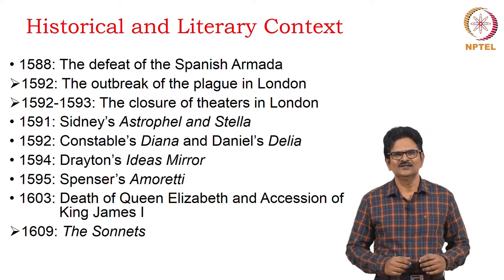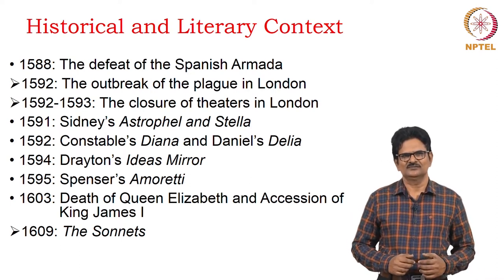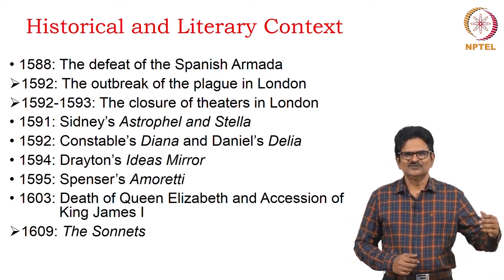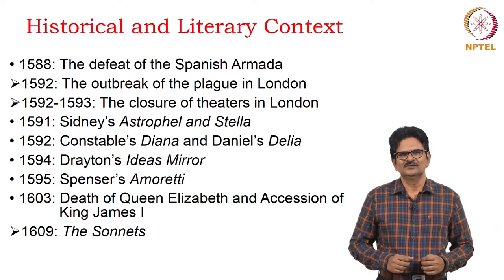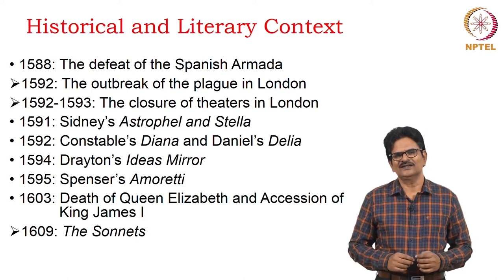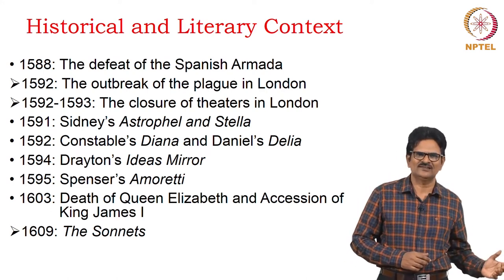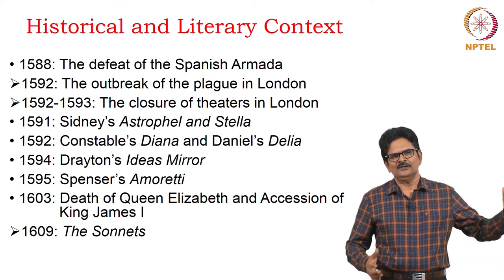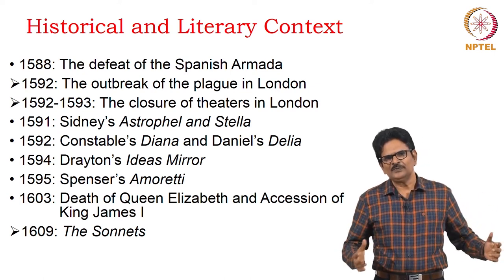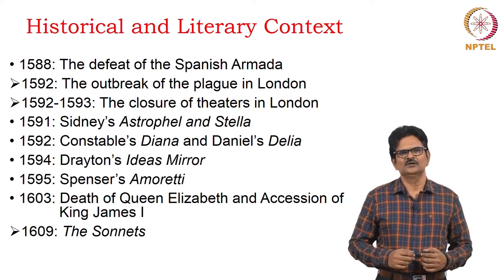Closely, we have Spenser's sonnet sequence, Amoretti. And soon after this, in 1603, we find the great loss in England — Queen Elizabeth died. We see the change of monarchy from Queen Elizabeth to King James I. After this period, we find the sonnets published in 1609.